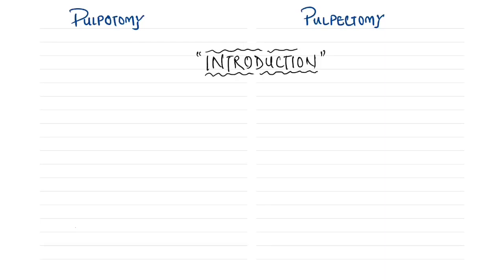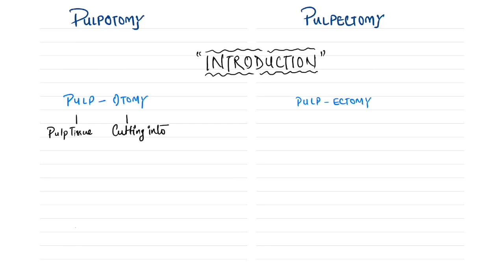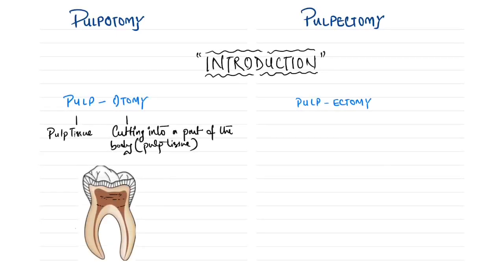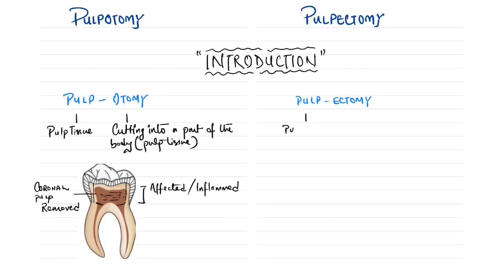Let's begin with the introduction. We divide the terms into two parts: pulpotomy and pulpectomy. The first term 'pulp' refers to the pulp tissue, and 'otomy' refers to cutting into a part of the body. In pulpotomy, we consider a tooth with an affected or inflamed coronal pulp tissue — either due to carious or traumatic exposure — and we remove the entire coronal pulp tissue.